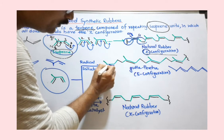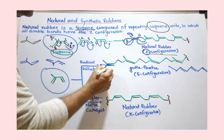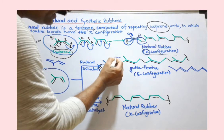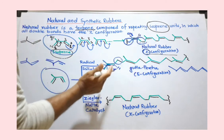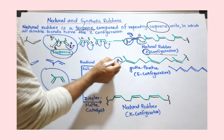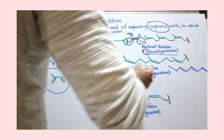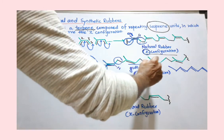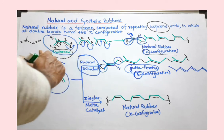In gutta-percha the configuration is E. Consider the double bond: at one carbon there is hydrogen and the bulkier group is on the opposite side of the double bond. When the bulkier groups are toward opposite sides of the double bond, we call it E configuration. So using a radical initiator in the laboratory produces E configuration, giving gutta-percha. Gutta-percha is a hard material compared to natural rubber, which is soft and more elastic.